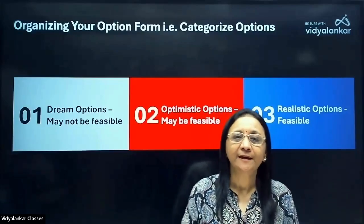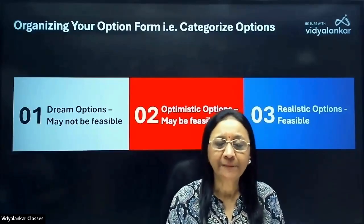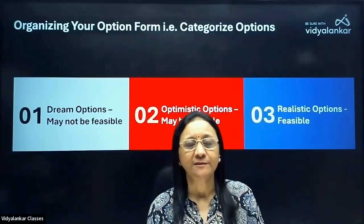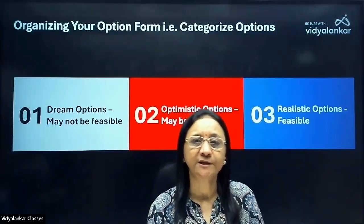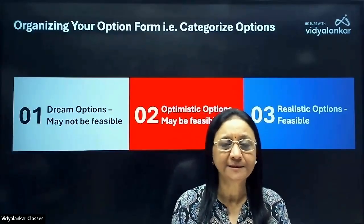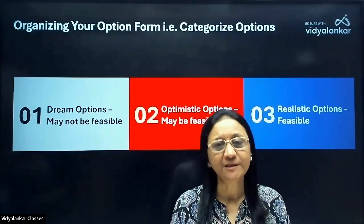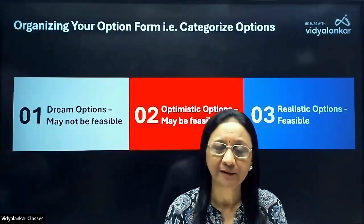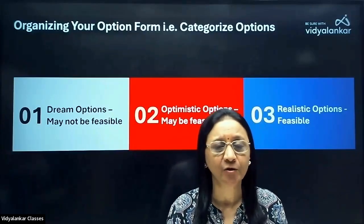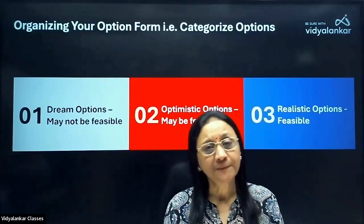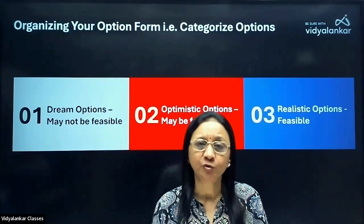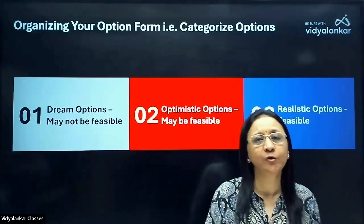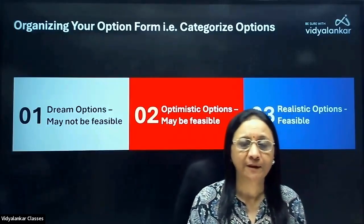Hello students, your CAP rounds for engineering admissions will start after 17th of July. Once you get your state rank on 17th of this month, that's the time you need to fill in your option form.